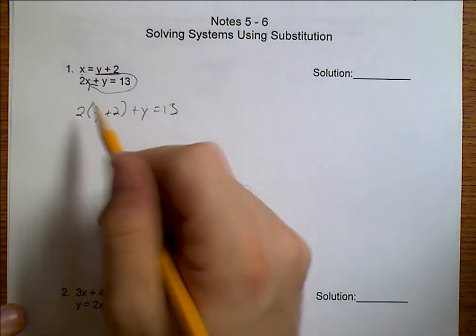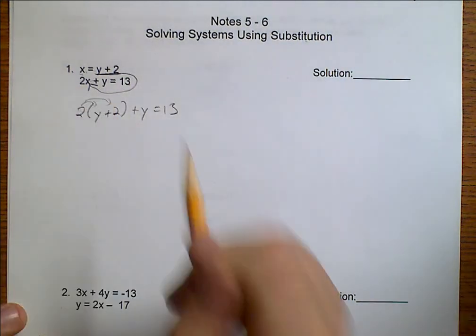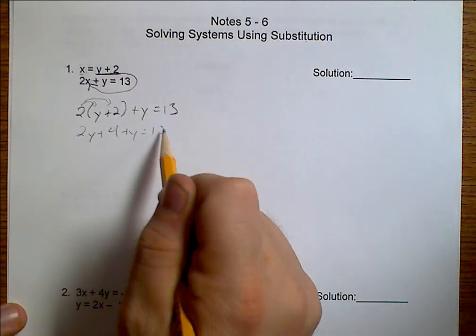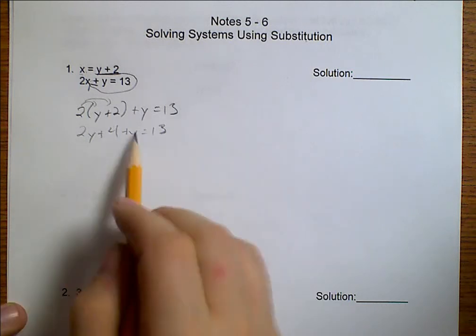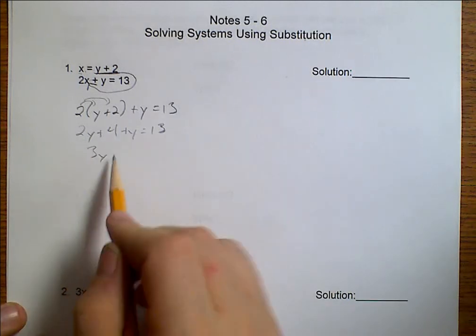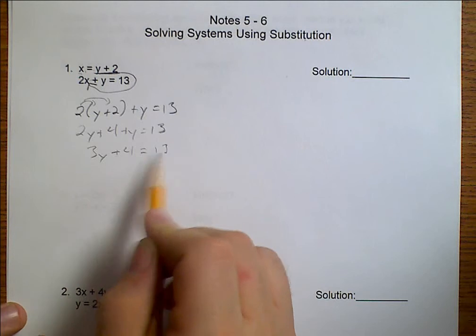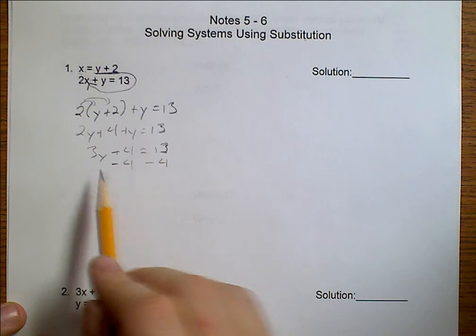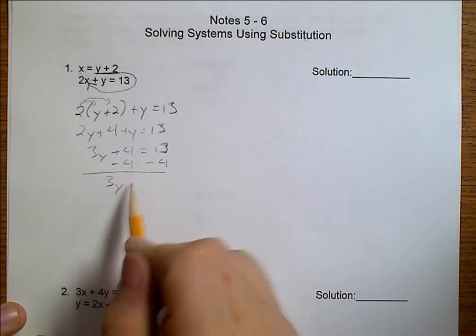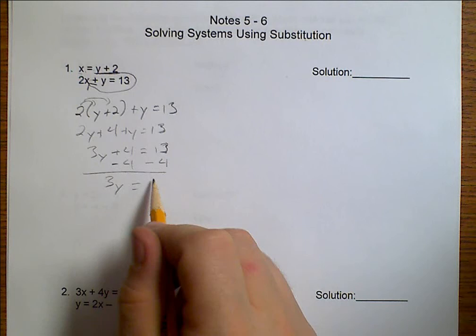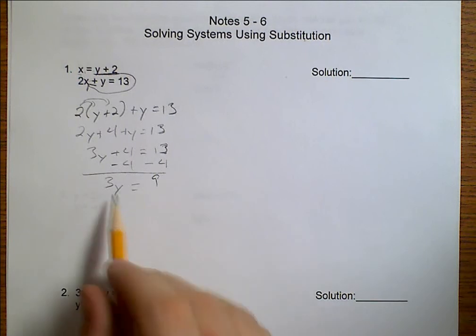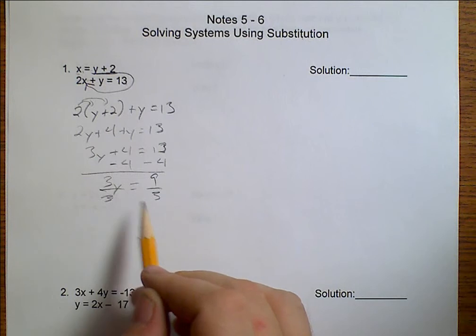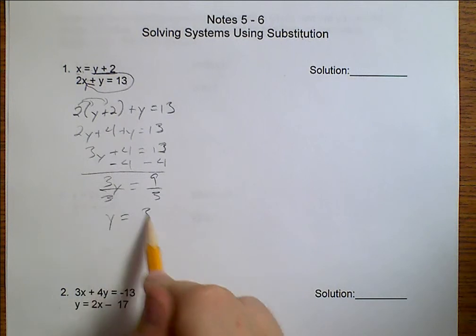Now, we just solve for Y. We start by distributing. 2Y plus 4 plus Y equals 13. 2Y plus Y makes 3Y plus 4 equals 13. We subtract 4 from both sides. We get that 3Y equals 9. We divide both sides by 3. We get that Y equals 3.